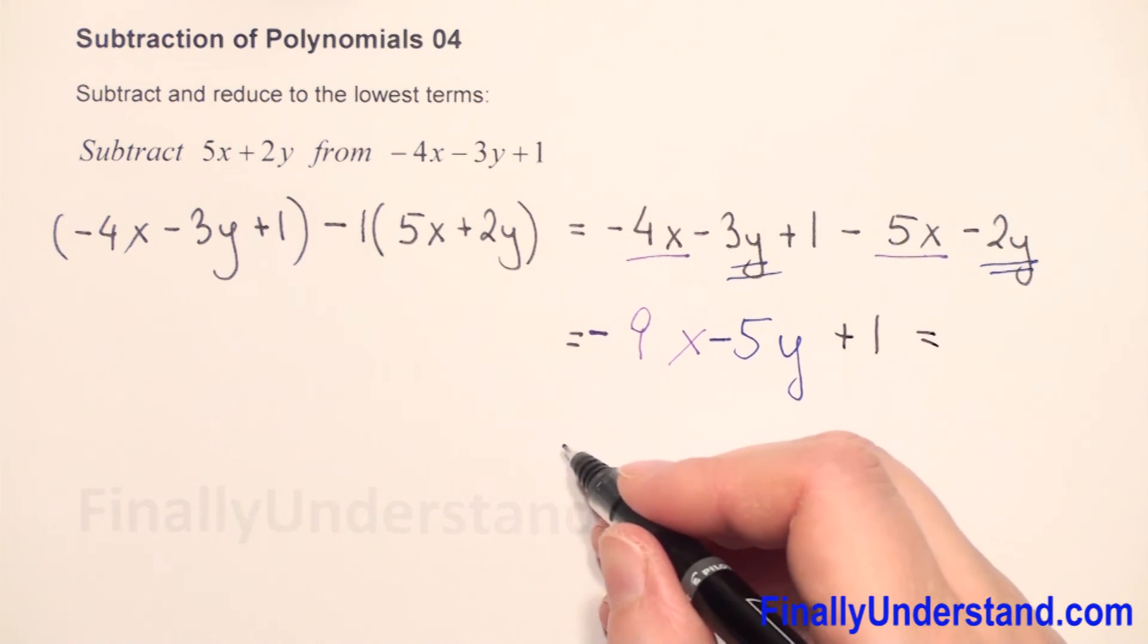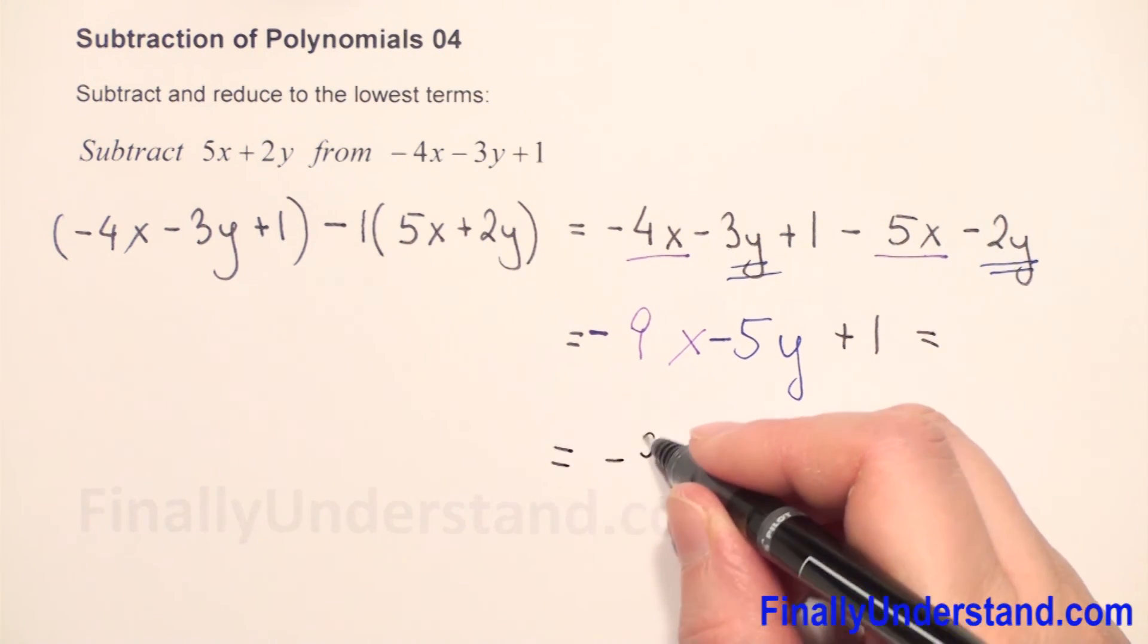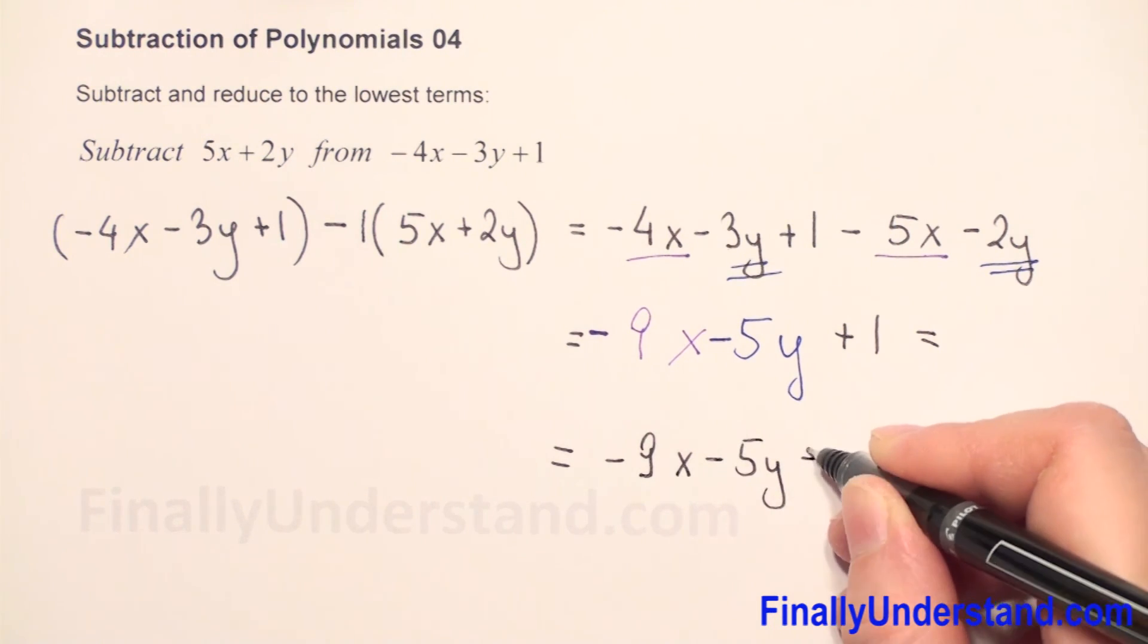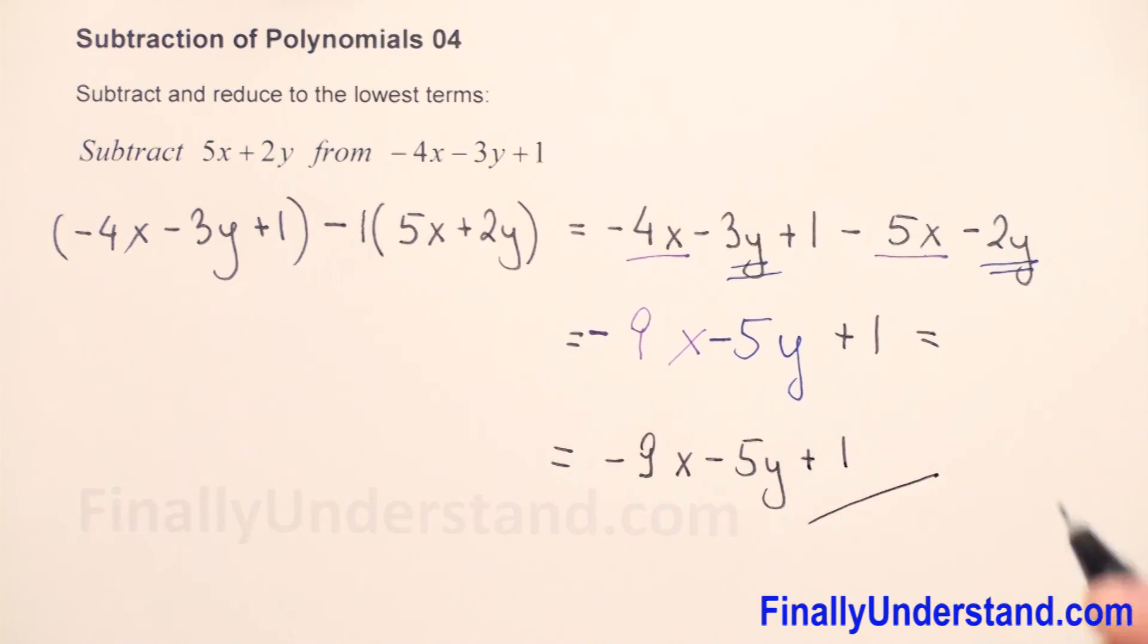So this equals—we can rewrite one more time—negative 9x minus 5y plus 1. This is the solution.